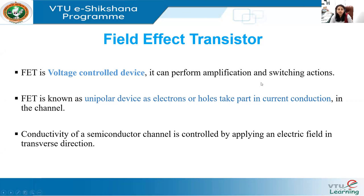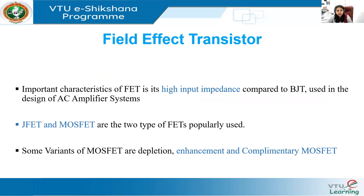Conduction of the semiconductor channel is controlled by the electric field in the transverse direction. Another important characteristic of FET is its high input impedance compared to BJT, and it is used in the design of AC amplifier systems. Typically, the impedance is in the range of one to several megaohms. Because FET has higher input impedance than BJT, they are preferred in amplifiers where high input impedance is required. FET devices also require less space compared to BJT, and hence they are preferred in integrated circuits.